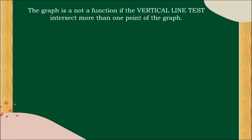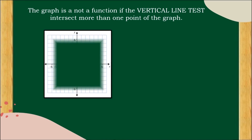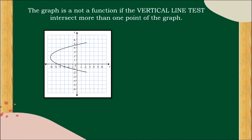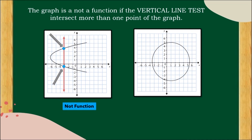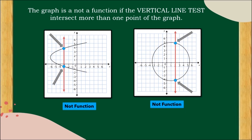The graph is not a function if the vertical line test intersects more than one point. In the third example, the vertical line intersects the graph at more than one point — so this is not a function. In the fourth example, the vertical line intersects at two points, so this is not a function because the vertical line intersects more than one point of the graph.